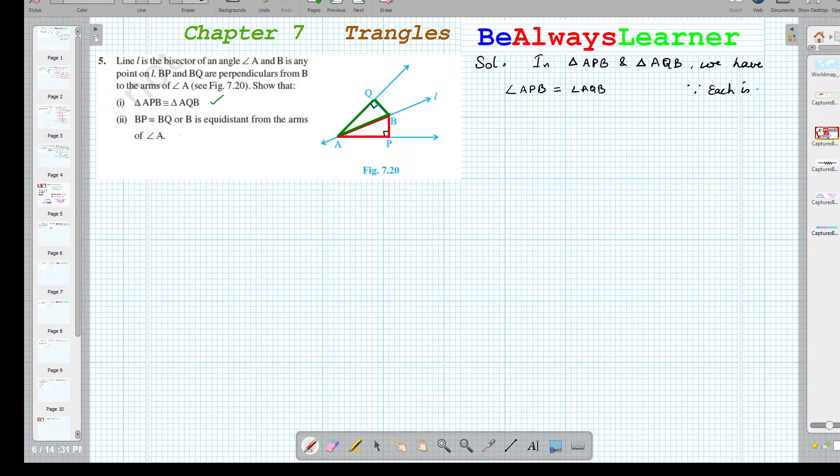We can say the angle at P in the red triangle is equal to the angle at Q. The angle in the red triangle at point A is equal to the angle in the green triangle at point A.